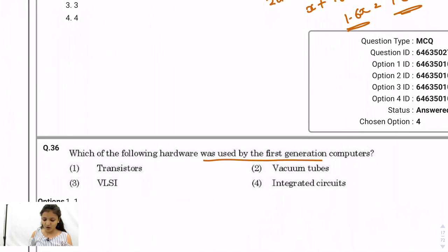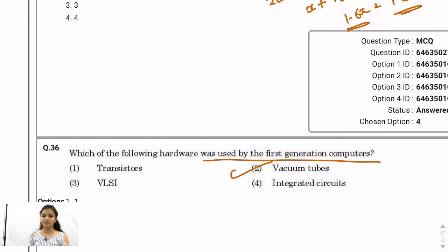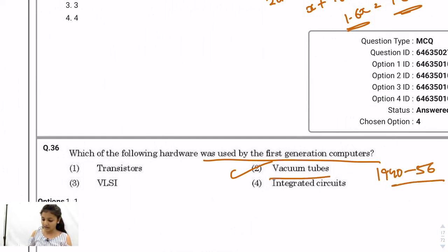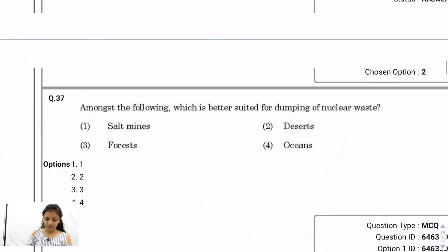Question 36: Which hardware was used by first-generation computers? The answer is vacuum tubes. First-generation computers spanned 1940s to 1956 and used vacuum tubes — they were as large as a room and very complex.